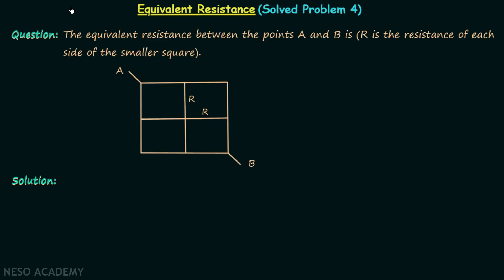In the last lecture we understood the process to calculate the equivalent resistance using the symmetry of the network. Now we are going to solve one problem using the concepts we developed in the previous lecture, and according to the problem we are required to calculate the equivalent resistance.